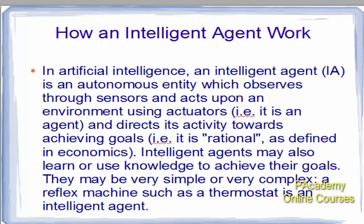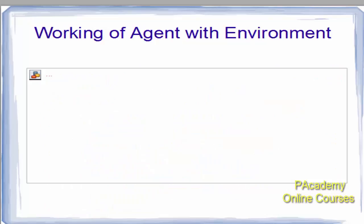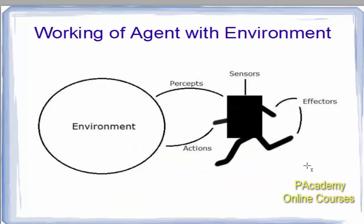Intelligent agents may be very simple or very complex. A reflex machine such as a thermostat is an intelligent agent. An agent uses sensors to perceive the environment and uses effectors to produce actions based on what it has perceived from the environment.